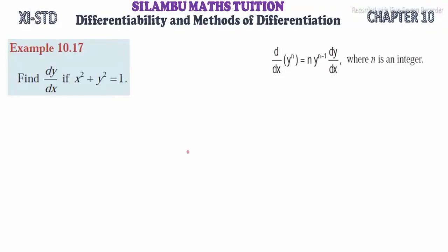Hi student, this is Sillambar Max tuition, 11th standard, example 10.17. Find dy by dx if x square plus y square is equal to 1. First thing, differentiate pannu mende equation copy pannu lala. x square plus y square is equal to 1.